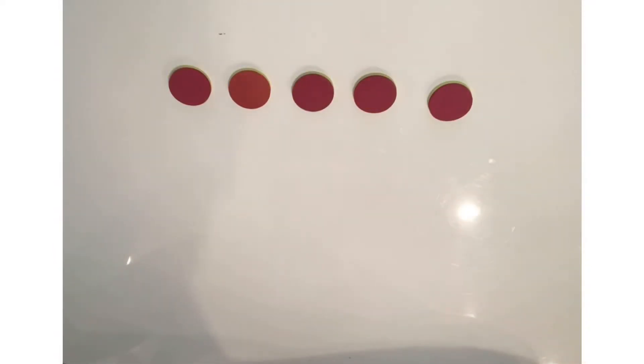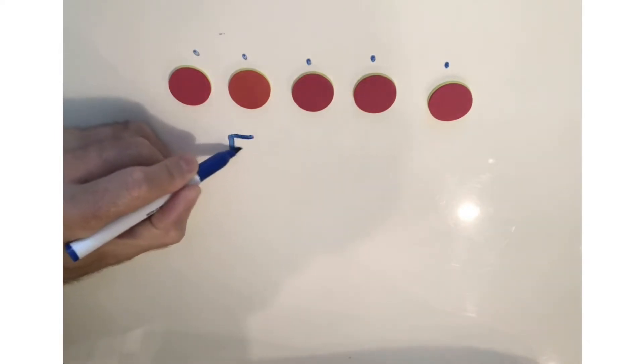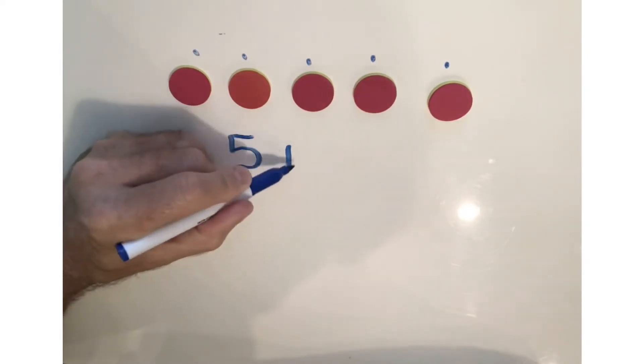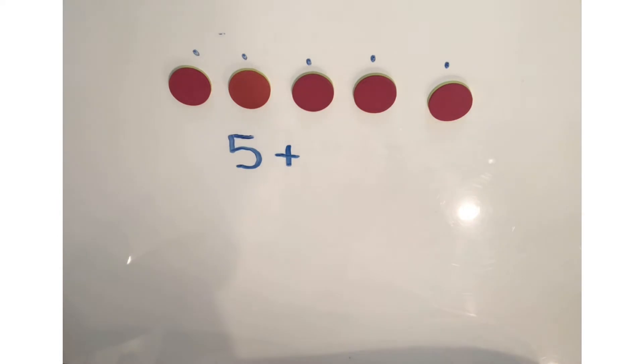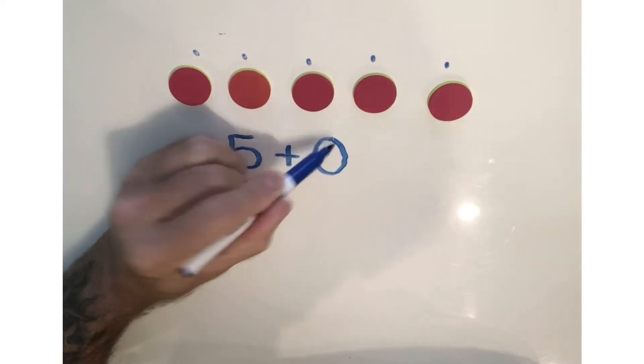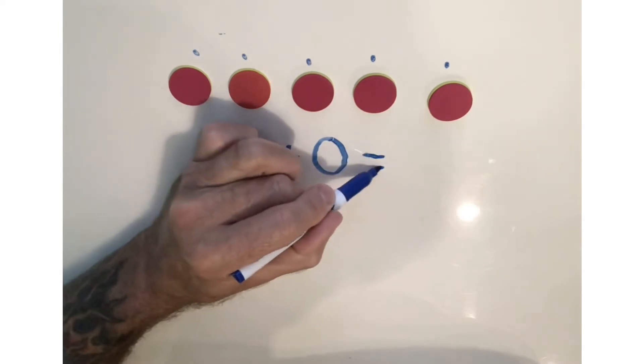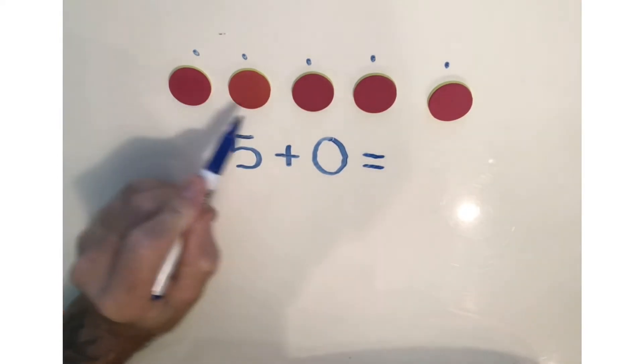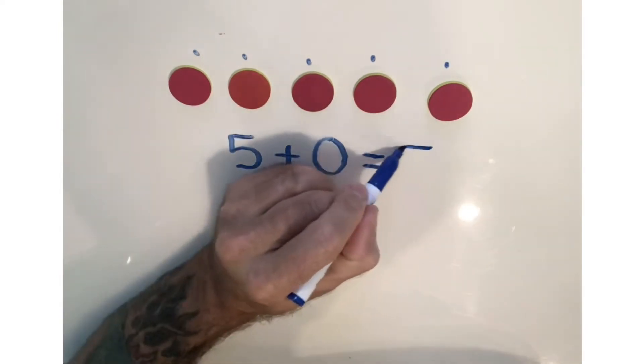Let's try another problem. We have five red disks. One, two, three, four, five. Five plus, how many yellow disks do we have? Zero. Don't forget to make a problem with zero. Equals. And how many disks do we have total? Five.